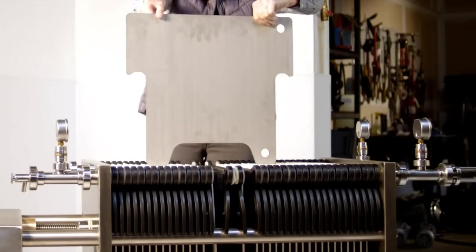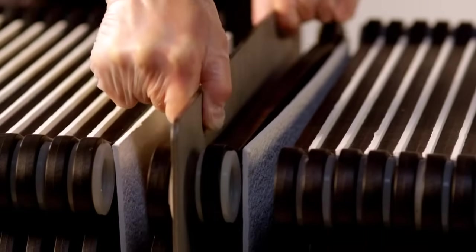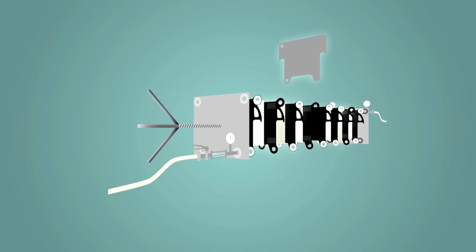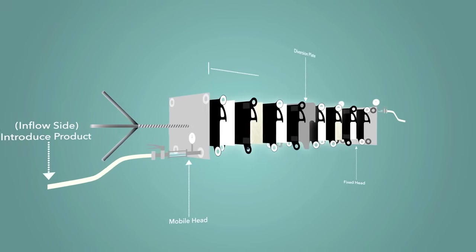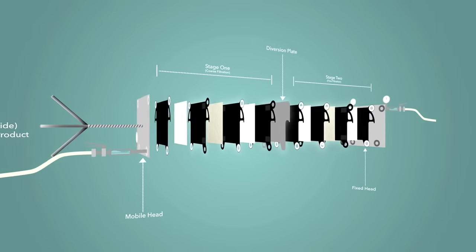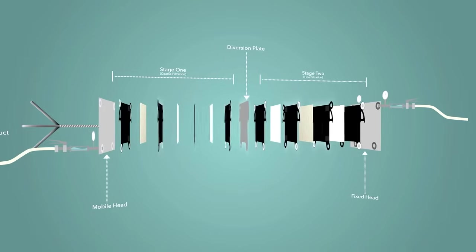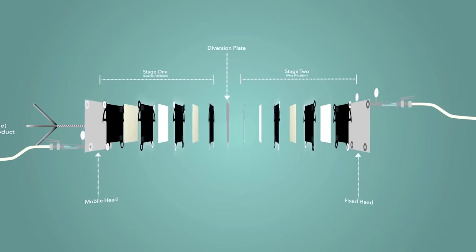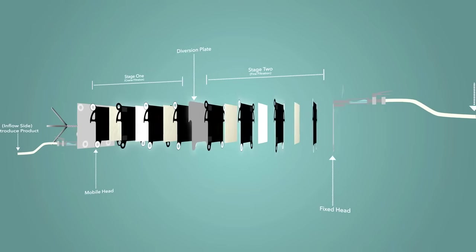When filtration through two different filter sheet grades is desired, a plate commonly referred to as a diversion or crossover plate can be used. The diversion plate effectively breaks a sheet filter into two stages. Stage 1 will be the first coarse filtration and stage 2 will be the finer filtration. This is done by isolating the inflow of your product in the rear portion of the machine. Product must then pass through your stage 1 filters in order to flow to the front portion.